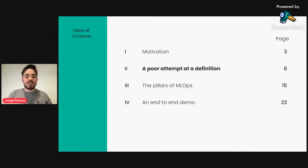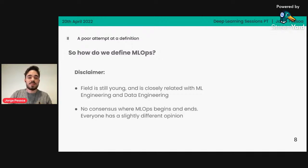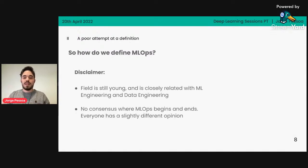Let's now try to understand what MLOps really is and what practices it's trying to deal with. There's always a disclaimer — it's actually really difficult to define a field that is so young, meaning like 2017–2018, where it started to get some relevance. At the same time, it's very close to other fields like ML engineering and data engineering, and there's literally no consensus on where one ends and another begins.